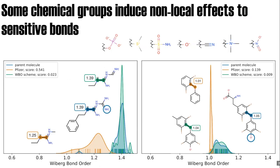After looking through the set, we identified which chemical groups induce these non-local effects. Shown at the top of the slide are the functional groups we found to induce these long-range through-bond effects. This is not exhaustive—it only reflects groups present in that benchmark set, and other groups may also induce long-range effects. The figures at the bottom show the parent molecule with the central bond highlighted in blue, with the functional group it is sensitive to circled.